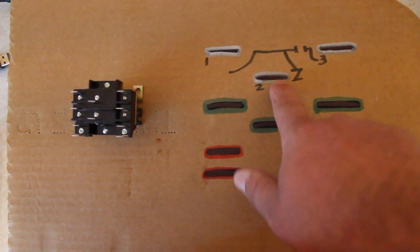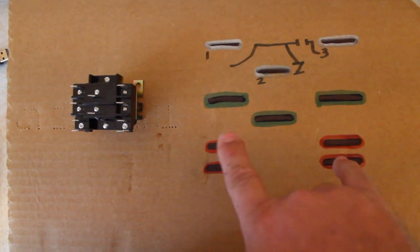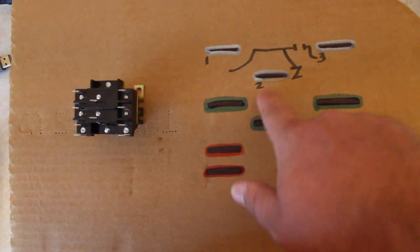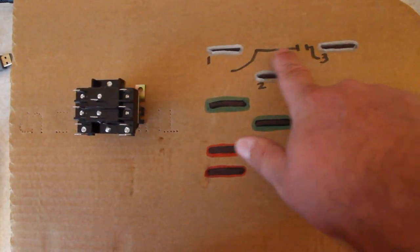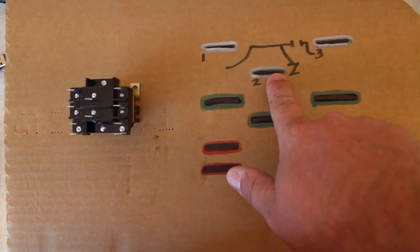Normally closed and normally open is talking about when there is no power to the coil. So when there's no power to the coil, it's open between one and three and closed between one and two.